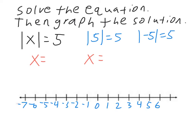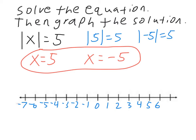The absolute value of 5 is 5, and the absolute value of negative 5 is also 5. So you have to have the positive version, 5, but it also could be the negative version, negative 5. So x could be either 5 or negative 5 — those are your answers: x equals 5 or x equals negative 5. Then we graph it by putting a point at 5 and at negative 5 on the number line.